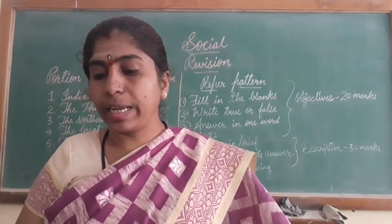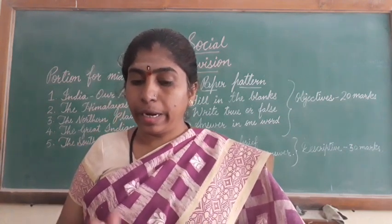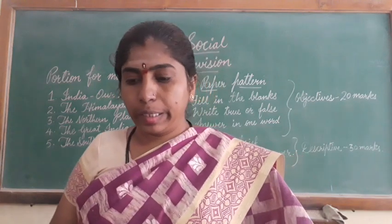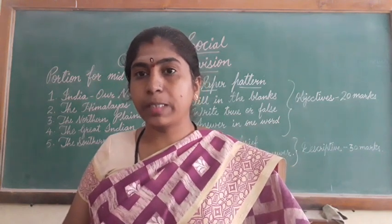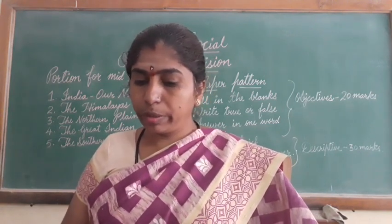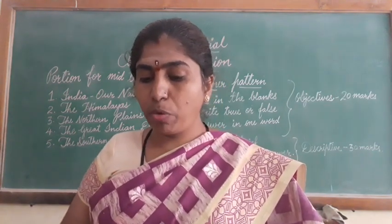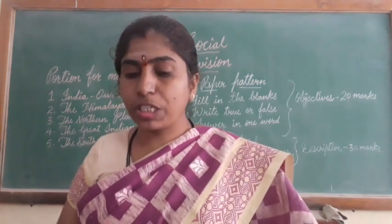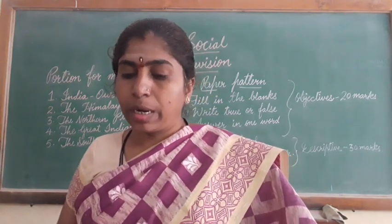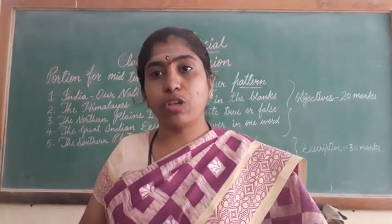Third short answer: how many union territories are there in India? Name them. You have to write the number and the names one by one — you need to know the spellings too. There are eight union territories: first, Andaman and Nicobar Islands; second, Chandigarh; third, Dadra and Nagar Haveli and Daman and Diu; fourth, National Capital Territory of Delhi; fifth, Lakshadweep Island; sixth, Puducherry; seventh and eighth, Jammu and Kashmir and Leh in Ladakh. Practice the spellings of all these names.